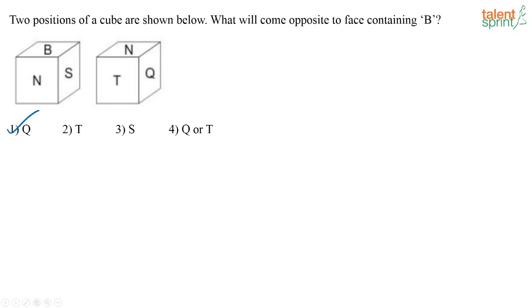Yes, Q will be your correct answer. Imagine that you are tilting the cube and this face N is going upwards and you have placed it in such a way that these two faces are seen. So obviously B has to go — check where B should go.